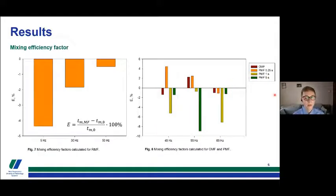The mixing efficiency factor is a tool for comparing mixing times obtained for the measurement with magnetic fields to the control measurement without any magnetic influence. When it has negative value, the effect of the magnetic field is positive and results in shorter mixing time.